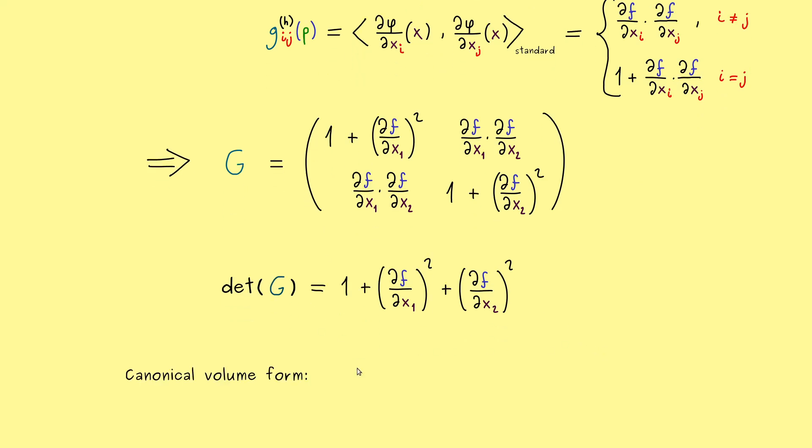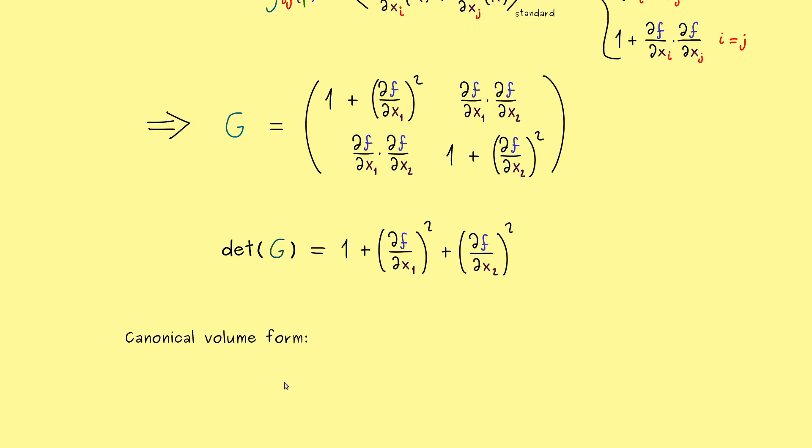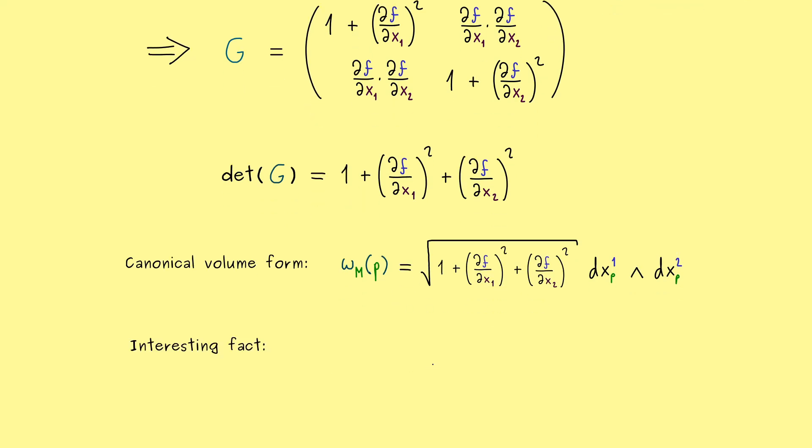Now we are finally ready to write down the canonical volume form for a graph surface. So essentially we just have the square root of this determinant here. And as always on the right we just have the standard volume form that comes from R² here. So now you already know, if you want to integrate the canonical volume form for a graph surface, this factor here comes in. However, at least in our 2-dimensional case here, we have a very interesting fact.